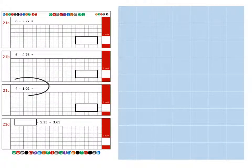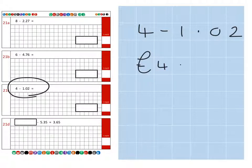And next we're going to be looking at question 21c. And for this we're going to change the numbers into money which a lot of children find very helpful. So the original question was 4 subtract 1.02. And if I change that into money which is £4 subtract £1 and 2 pence.